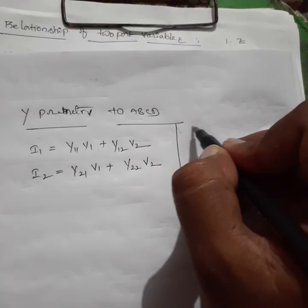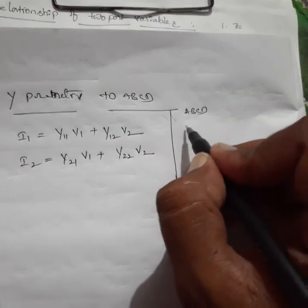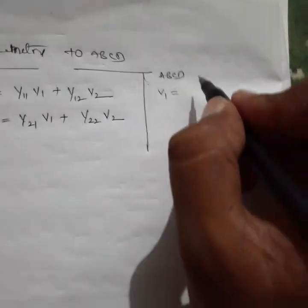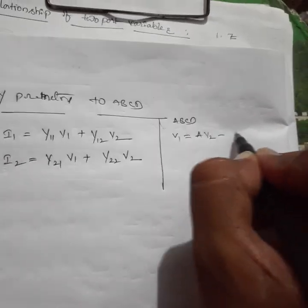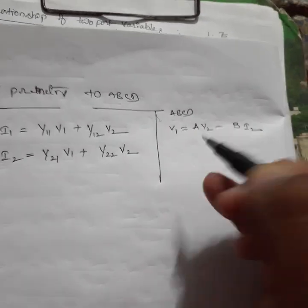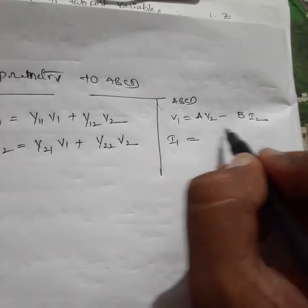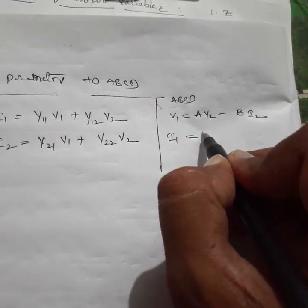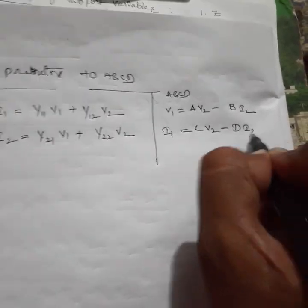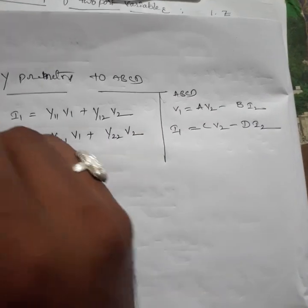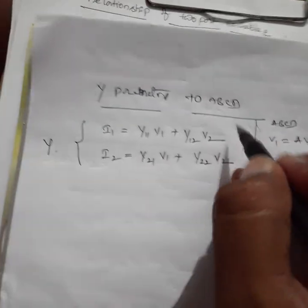The ABCD parameters are: v1 equals A·v2 minus B·i2, and i1 equals C·v2 minus D·i2. Here the Y parameter equations are taken as equation one and equation two.